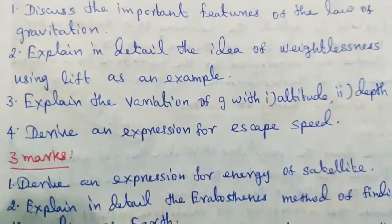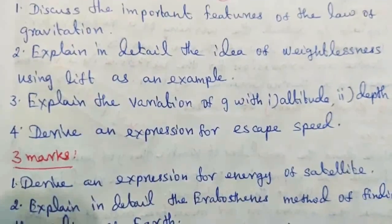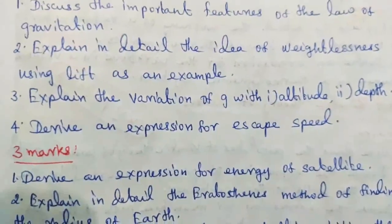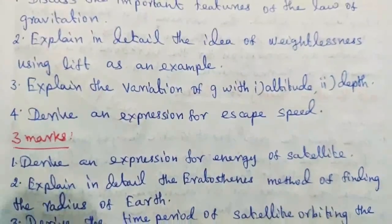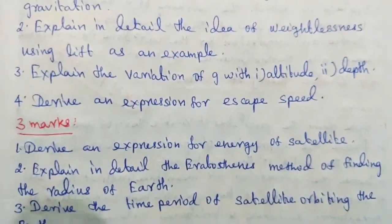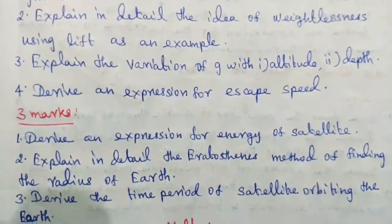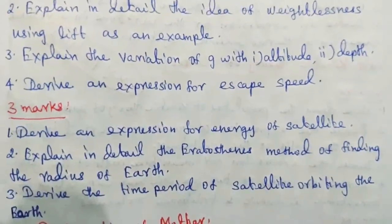Then 3 marks. First question: Derive an expression for energy of satellite. Question number 2: Explain in detail the Eratosthenes method of finding the radius of Earth. Third one: Derive the time period of satellite orbiting the Earth.